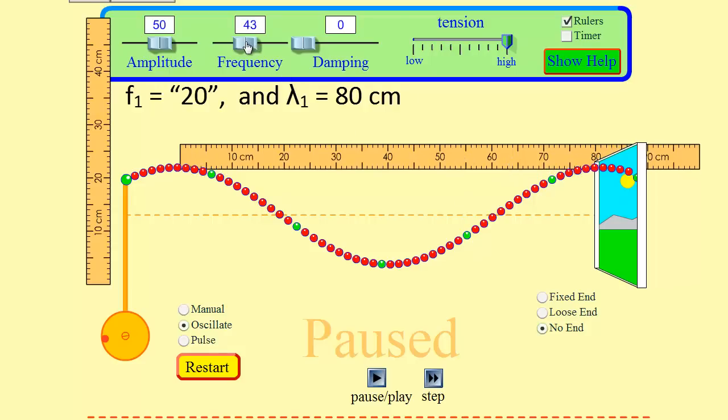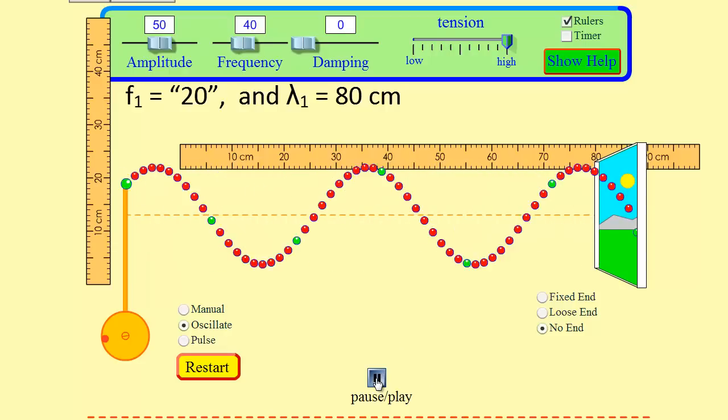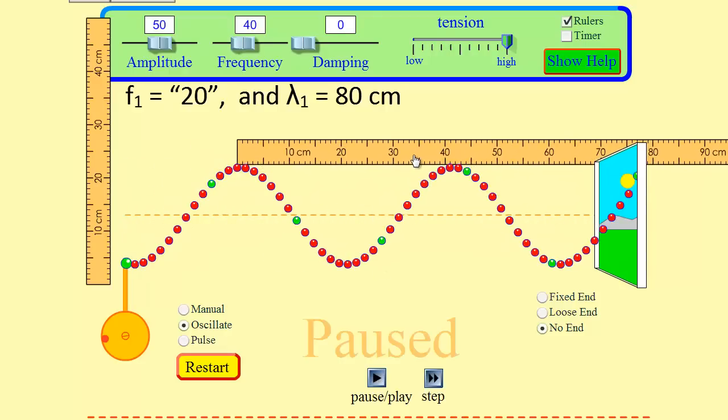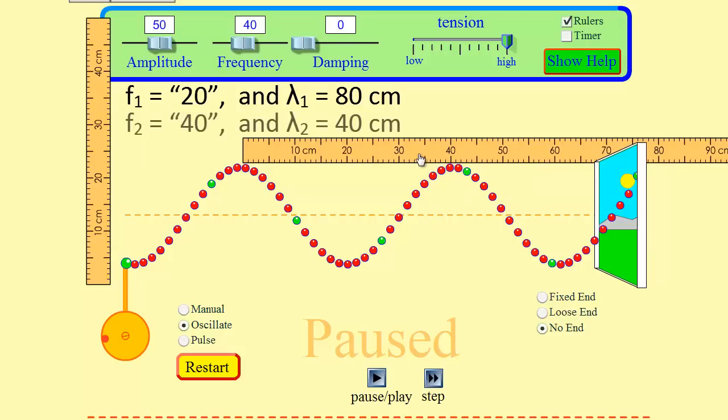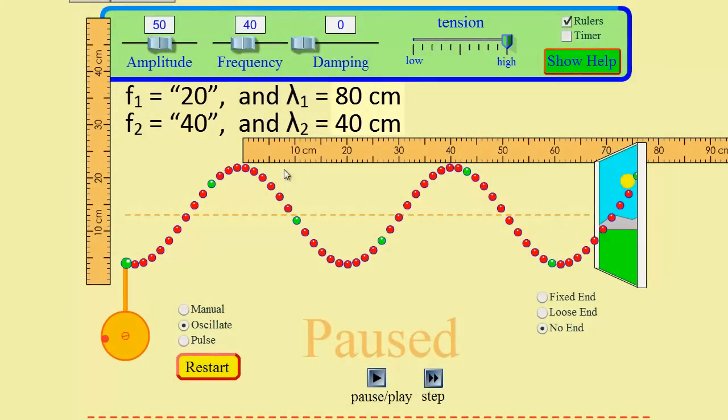Now let's take our frequency and double it. Let's bring it up to 40 and see what happens. Okay, so I've doubled the frequency. And again, I'll pause it and measure from crest to crest. And we can see that our wavelength is now 40. So doubling the frequency has halved the wavelength.